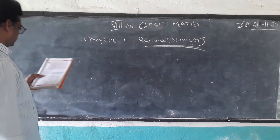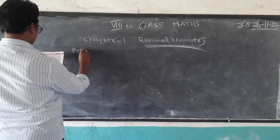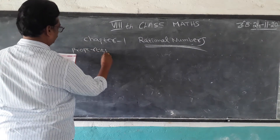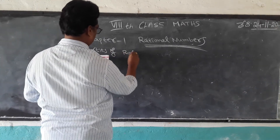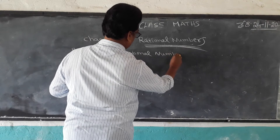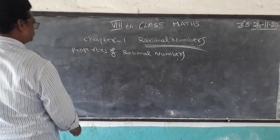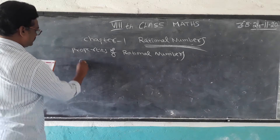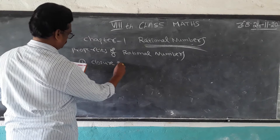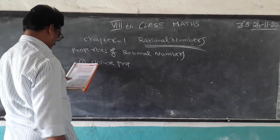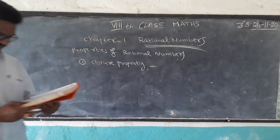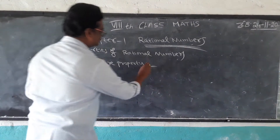Properties of Rational Numbers. The first property is the Closure Property.